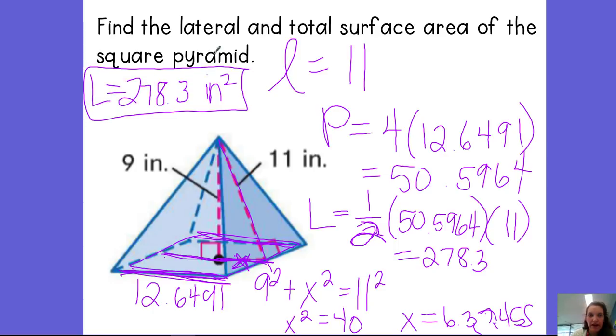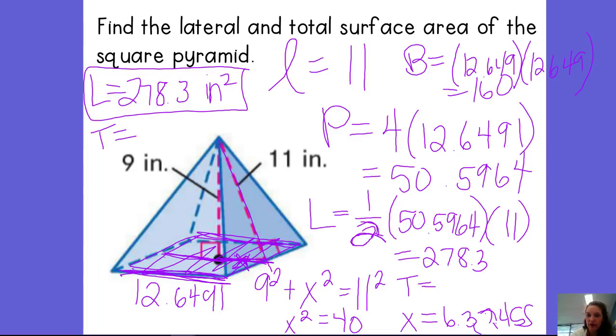It's squared. And then your total surface area, you're just going to take that lateral surface area. And then you're going to add the area of the base. So the area of the base is just a square, length times width. So 12.649 times 12.649. So the area of that base is 160. So your total surface area, you're just going to take your lateral surface area and add the area of that base to it. So I'm going to take the lateral surface area, 278.3. And I'm going to add the area of the base, which is 160, to get my total surface area to be 438.3 inches squared.